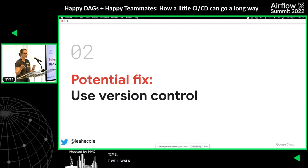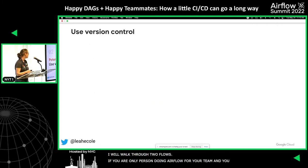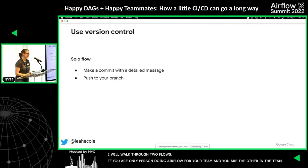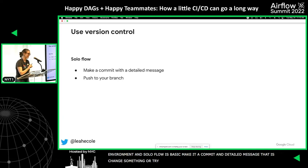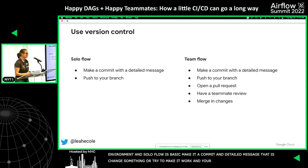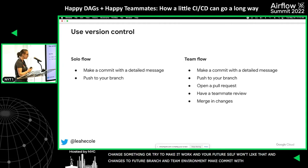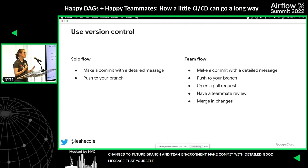I'm going to walk through two flows: one if you're the only person doing Airflow for your team, and the other if you're in a team environment. The solo flow is pretty basic — make a commit with a detailed message that's more than just 'changed something' or 'tried to make it work,' and push your changes to a branch. In a team environment, make that commit with a good detailed message, push to your branch, open a pull request, have someone review it, and merge those changes into your main branch.